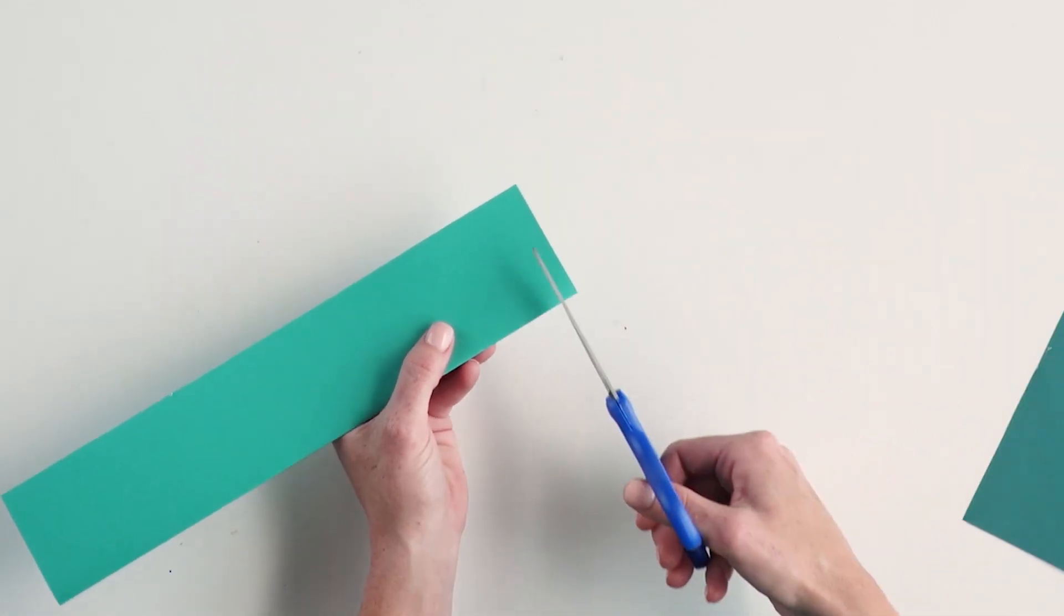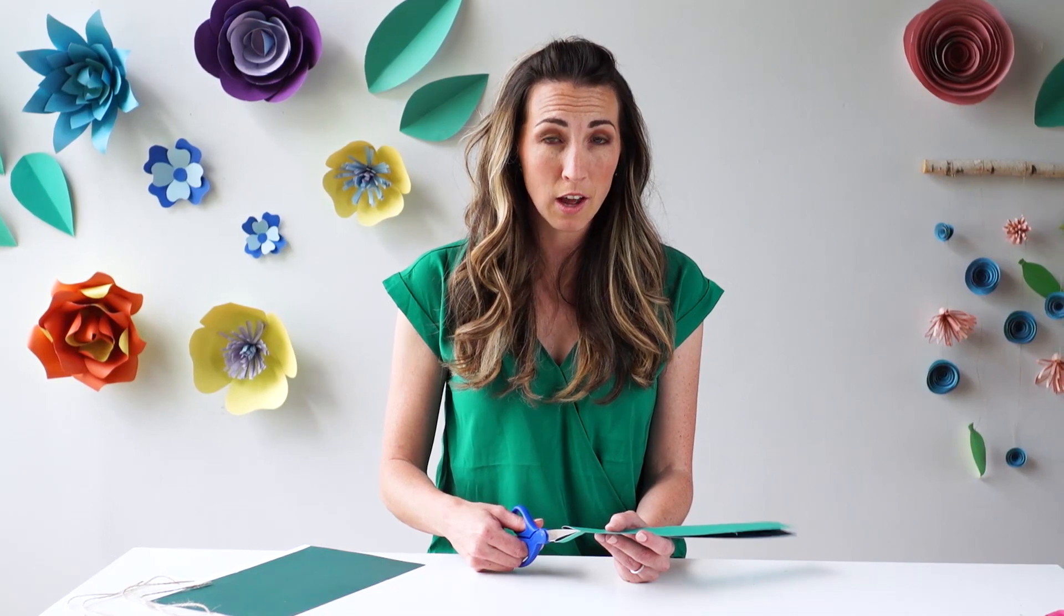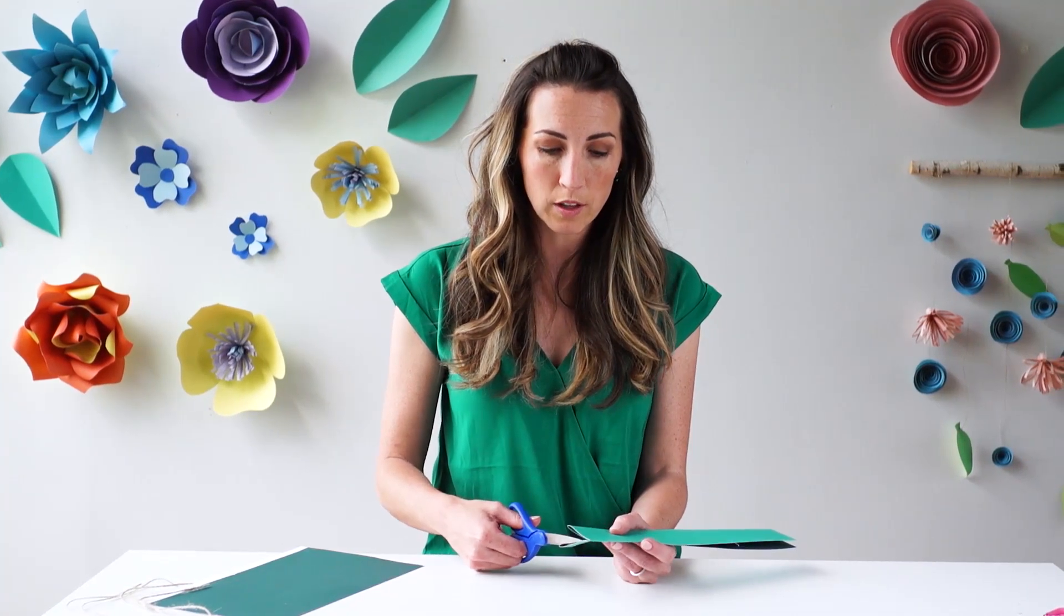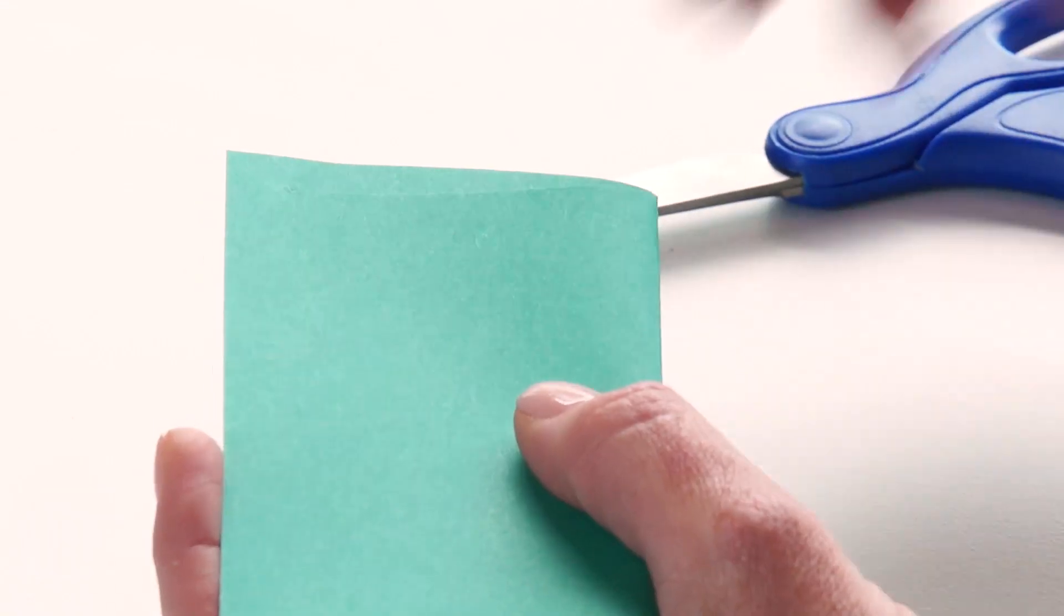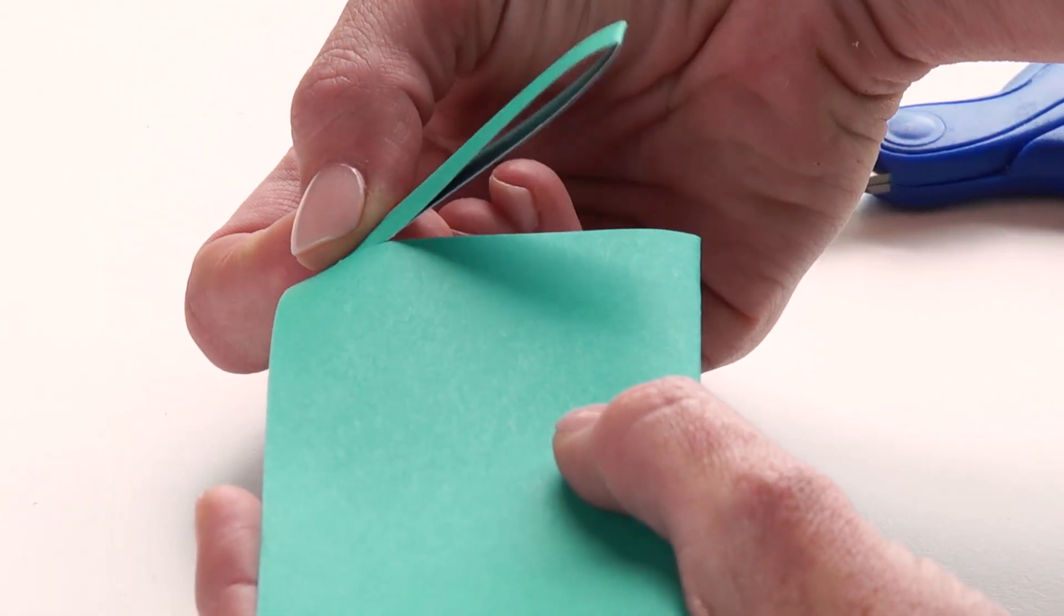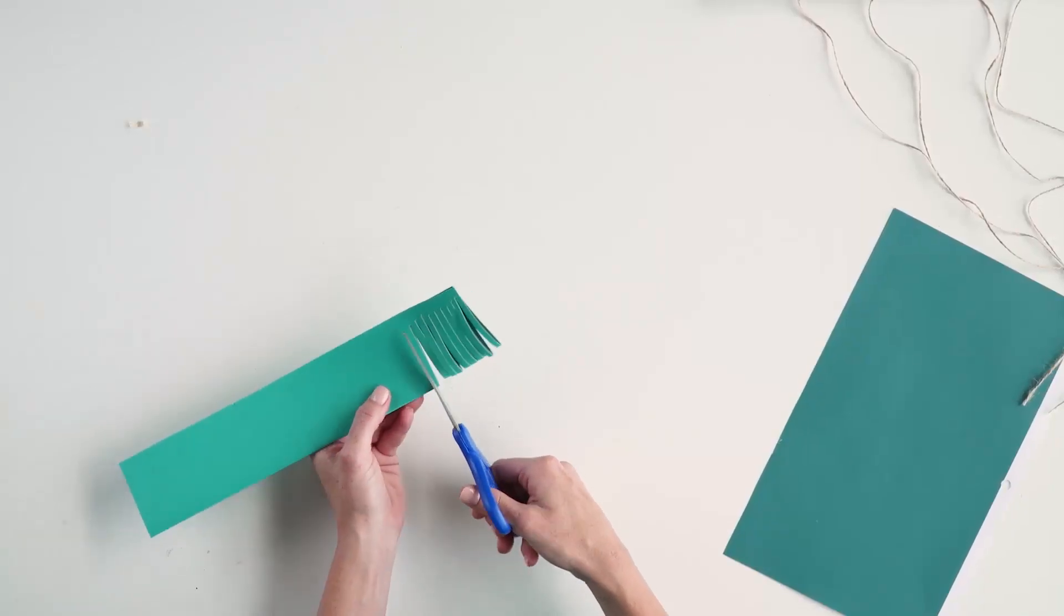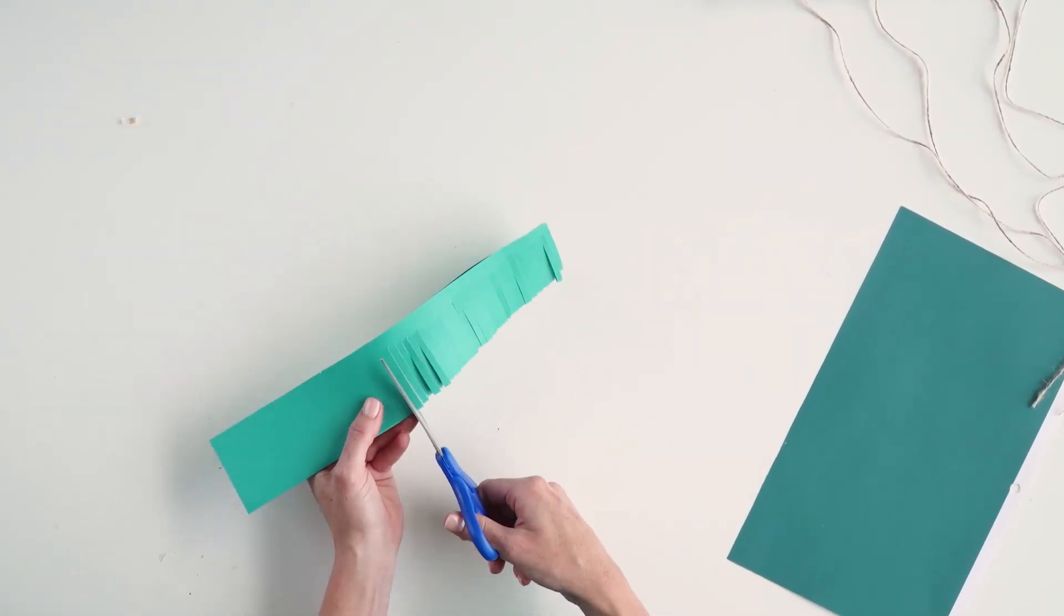So now all we have to do is take our scissors and cut a line straight down. Make sure not to cut all the way to the bottom. You want to leave a little bit of room so that it doesn't go completely off of the paper. And now you're just going to continue this cut all the way down the paper.